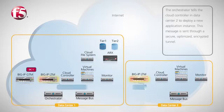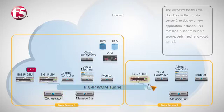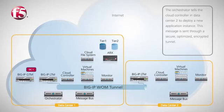Next, the orchestrator sends the data it collected to the cloud controller in data center 2, telling it to deploy a new application instance. This message is sent through a secure, optimized, and encrypted tunnel between the Big IP LTM devices in each data center, using the Big IP WAN optimization module.